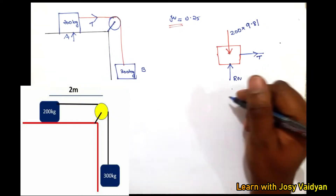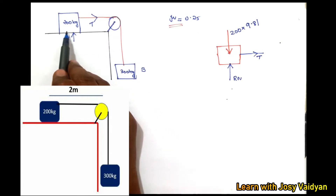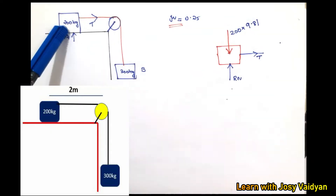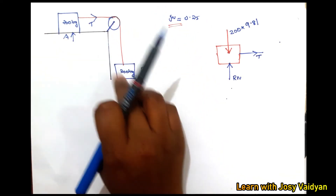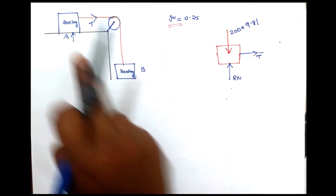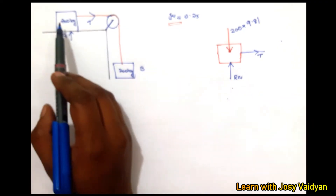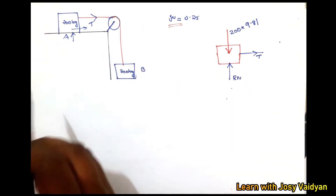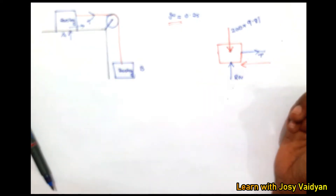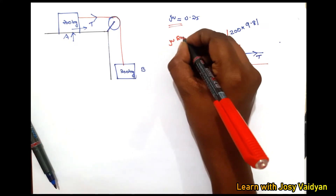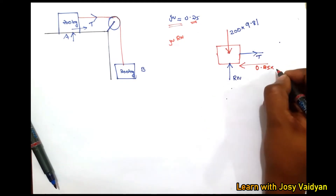There is also a friction force since the plane is not smooth. The block moves to the right — toward the pulley — so the friction force acts in the opposite direction, to the left. We mark the friction force as mu into RN, where mu is 0.25.